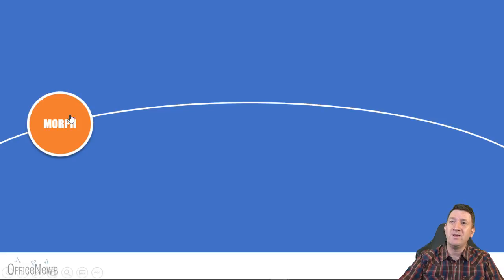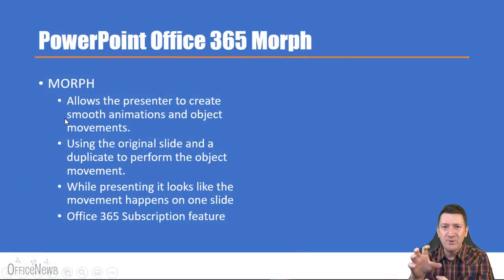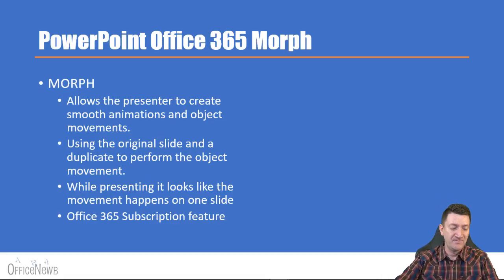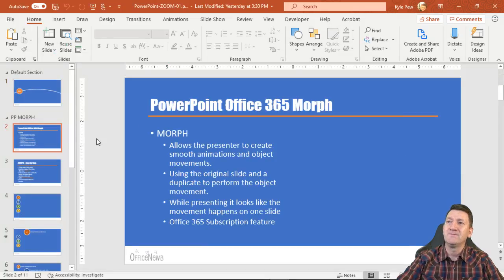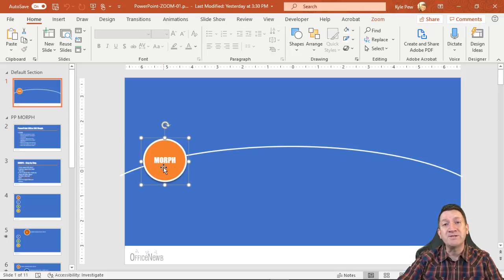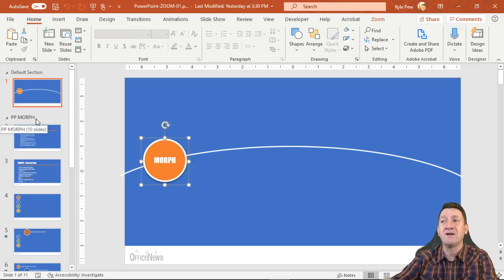When I clicked on it, it actually zoomed — it provided a pretty slick animation taking me into that section of the document. I'm going to escape out to take me back to my working presentation. When I click that button while presenting, it takes me to a section — in this case, PP Morph — to pick up and present from there.